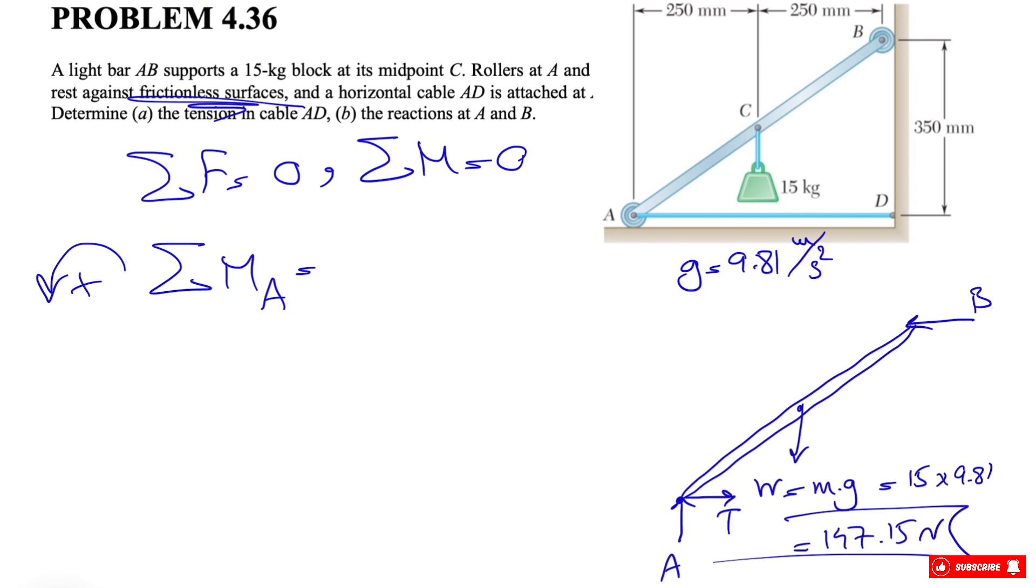So let's see what we have for the moment. We have the moment of the weight, obviously, and that would be a counterclockwise moment, so we have a negative sign: -147.15 times the distance. The distance will be from here to here, so this is the line of action of the force. This distance would be 0.25. By the way, we don't need to do the unit conversion because everything is in the same unit and they will be canceled at the end.